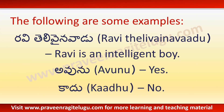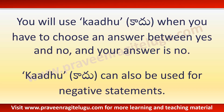Ravi Telivaina Vaadu — Ravi is an intelligent boy. Here you will use Kaadu when you have to choose an answer between yes and no, and your answer is no.